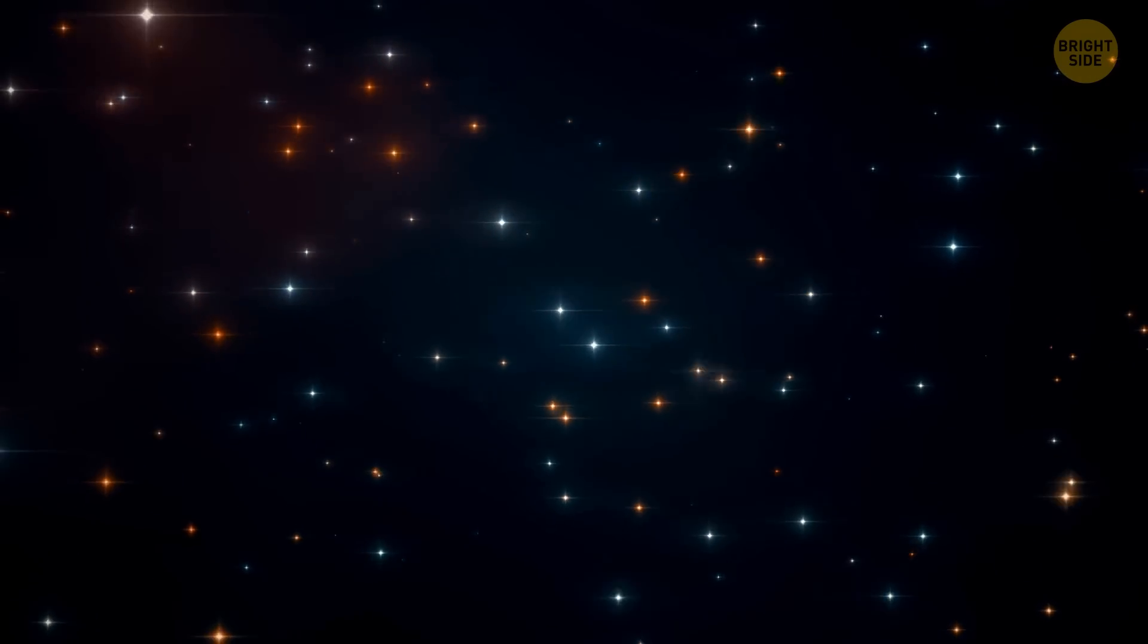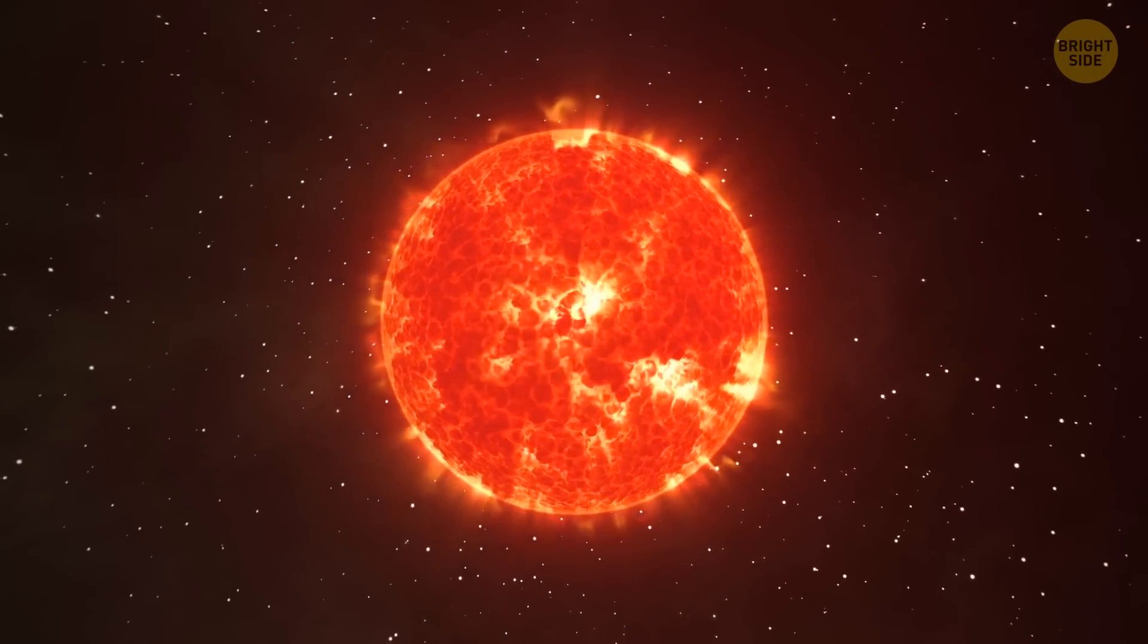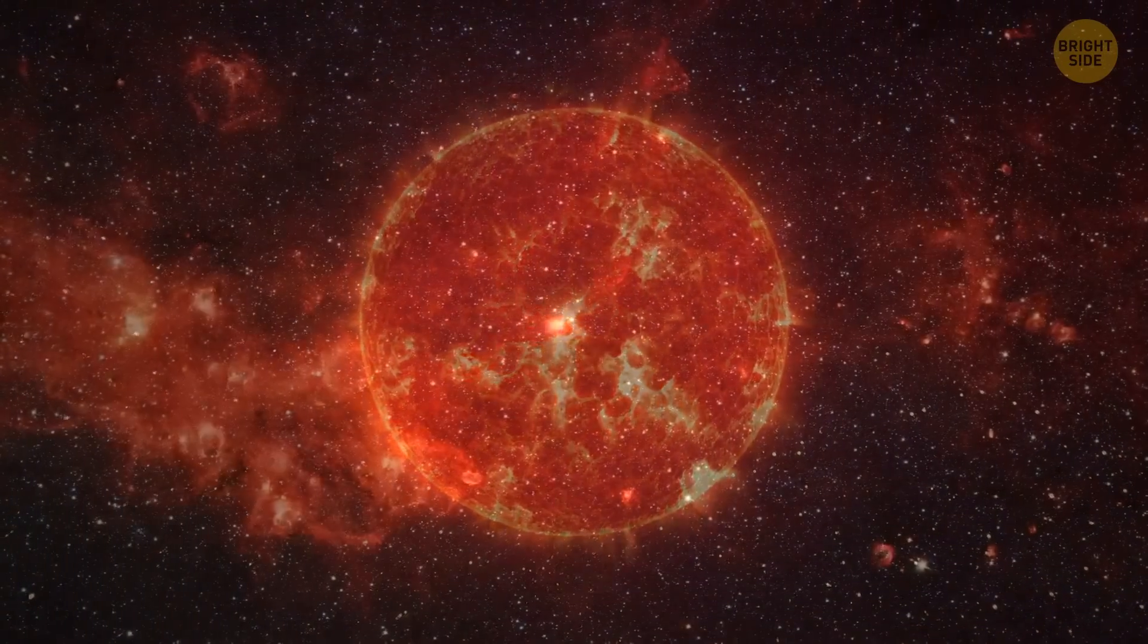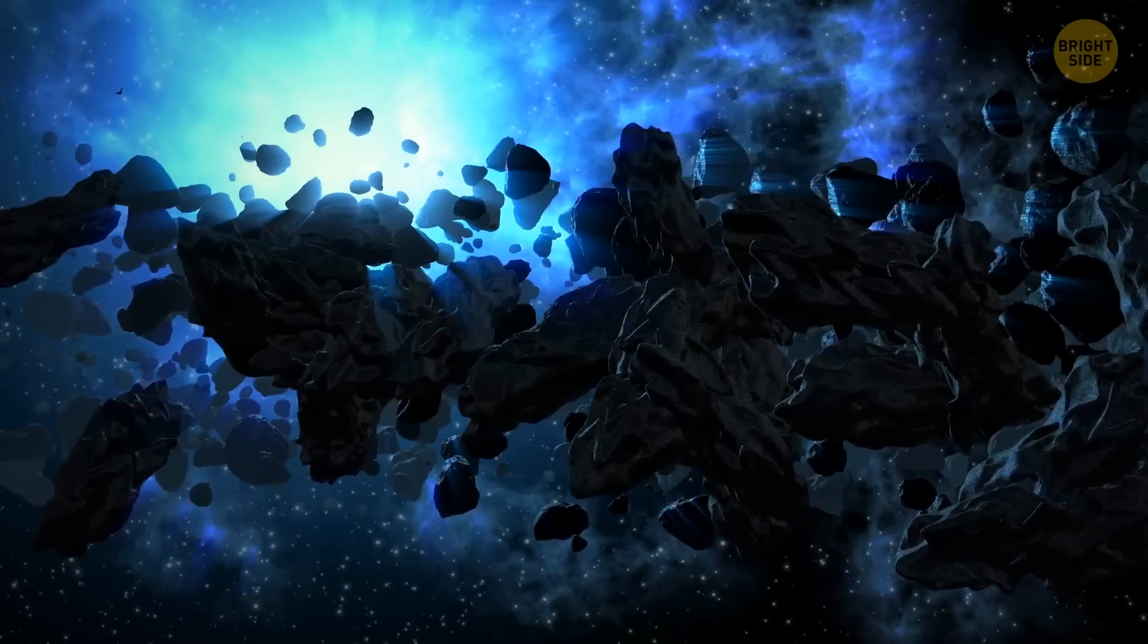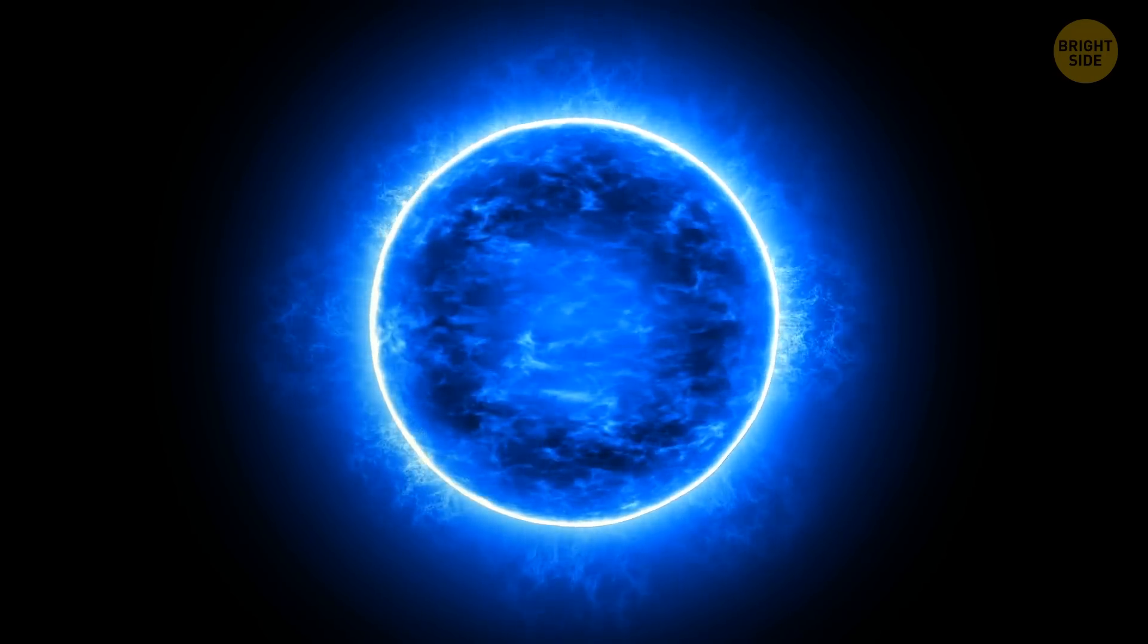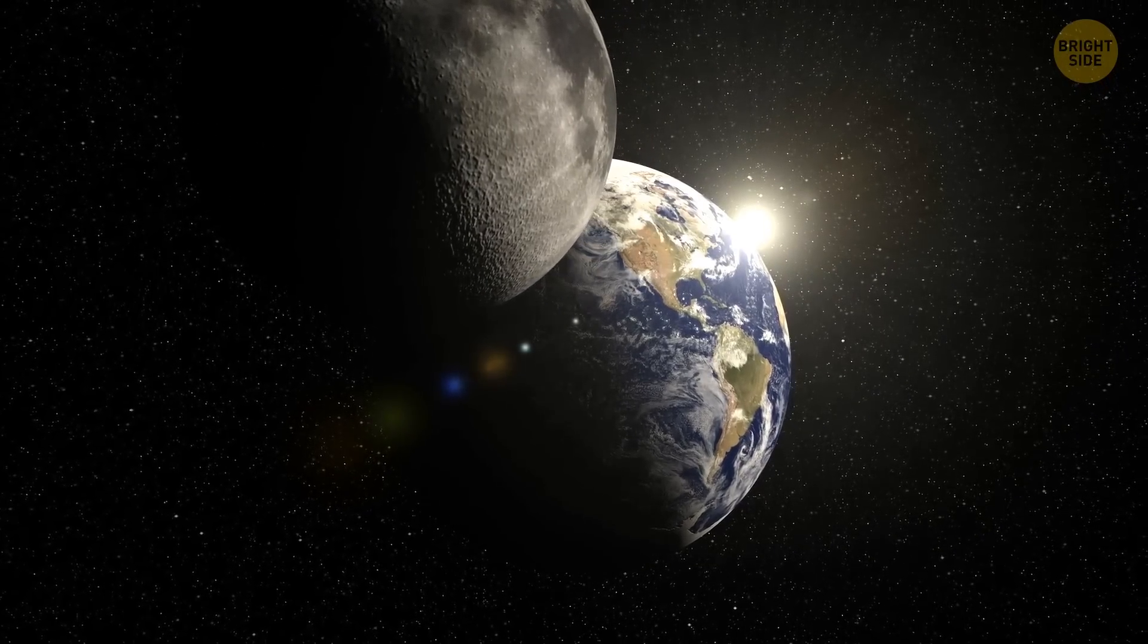But stars do come in different colors. Cooler stars have bright orange and red colors. These are usually very old stars, older than our sun. But young and very hot stars are bright blue. The sun is about in the middle of this spectrum.